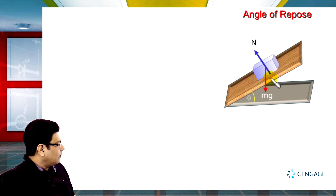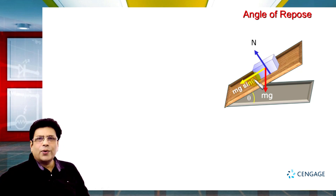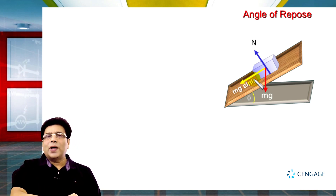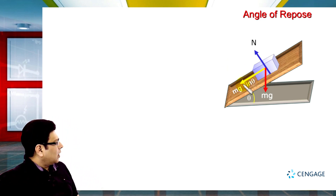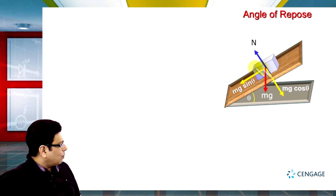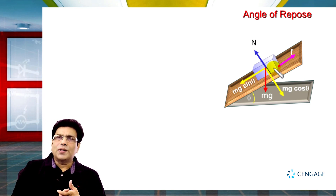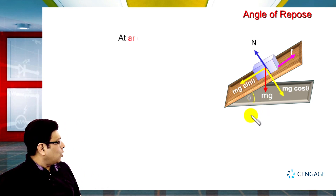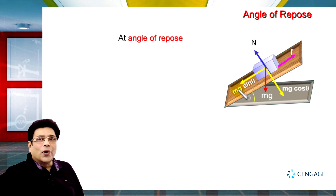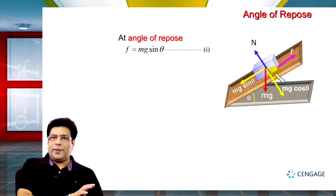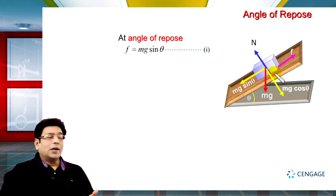Let us draw the free body diagram. For the block on the inclined plane, the component of weight parallel to the incline is mg sin θ, and perpendicular to the incline is mg cos θ. The sliding tendency of the block is in the downward direction, so friction acts in the upward direction. The angle at which the block just starts sliding is called the angle of repose. At angle of repose, friction force f = mg sin θ.